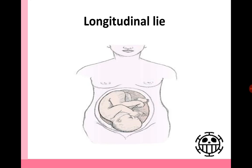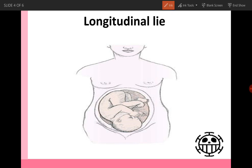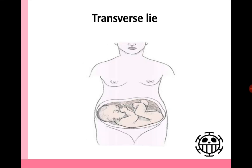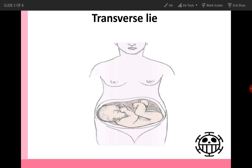The longitudinal lie means that the longitudinal axis of the mother, which is the maternal spine, is parallel to the longitudinal axis of the fetus, which is the fetal back. So we call it longitudinal lie — the maternal spine is parallel to the fetal back. This lie is common in term and early term fetus, more than 99%.